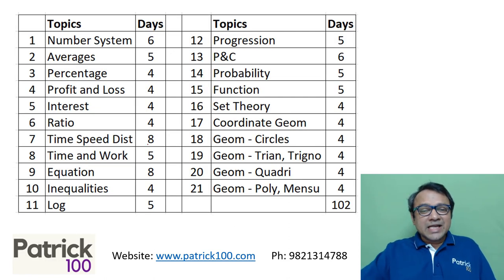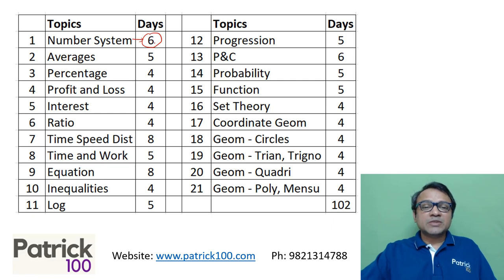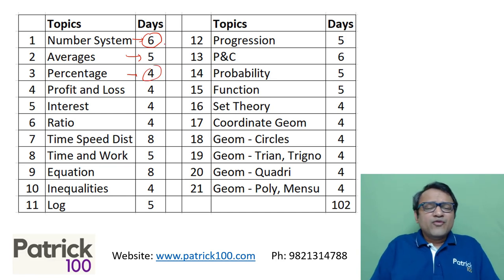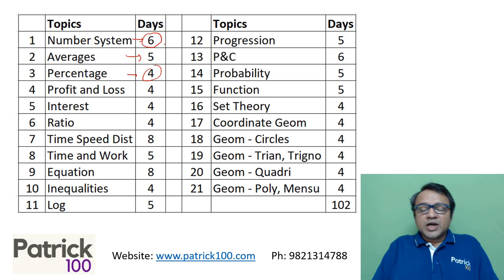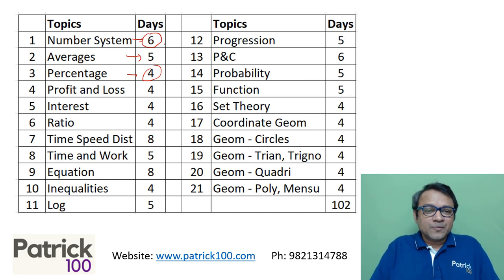This will give you the sort of syllabus that is there for Quant. These are the topics and the number of days you can spend on each topic. For example, Number System — you can spend six days. Averages is five days. Percentage, four days. You can vary the number of days: topics you are comfortable with, give fewer days; topics you are not comfortable with, give more days. You can vary the number of days based on your comfort level.